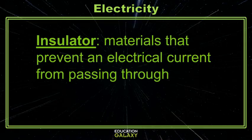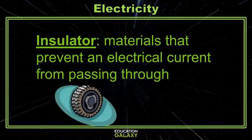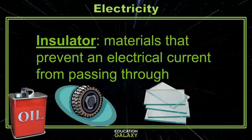Objects that prevent electrical current are called insulators. These include rubber, oil, glass, and dry wood.